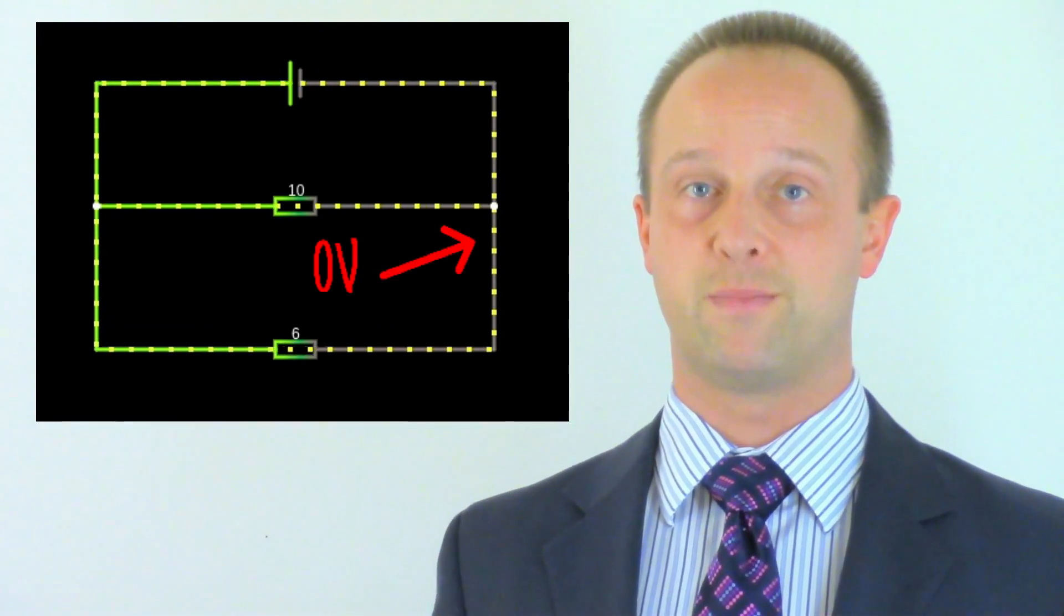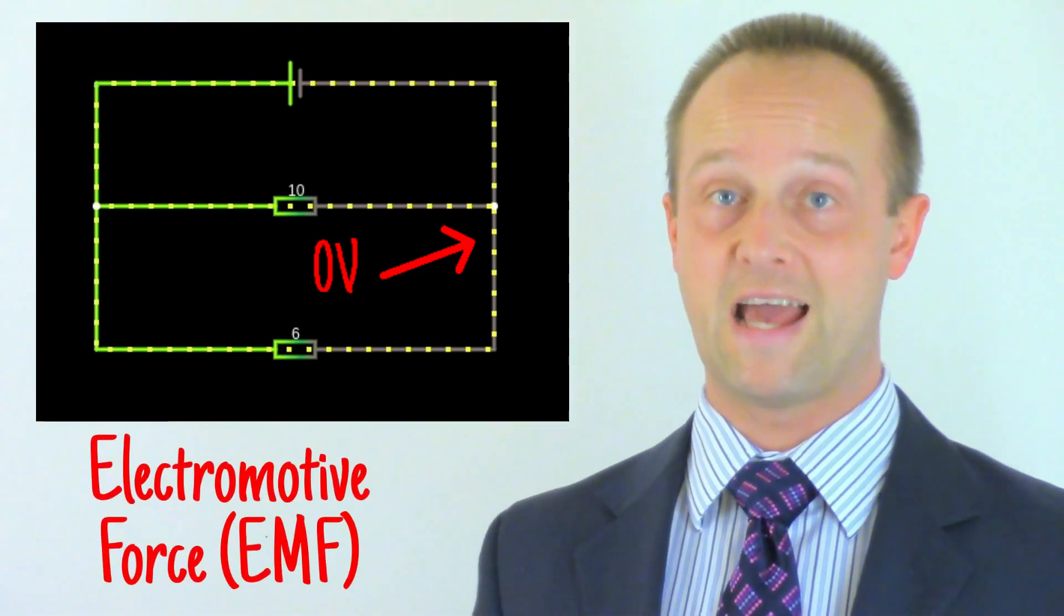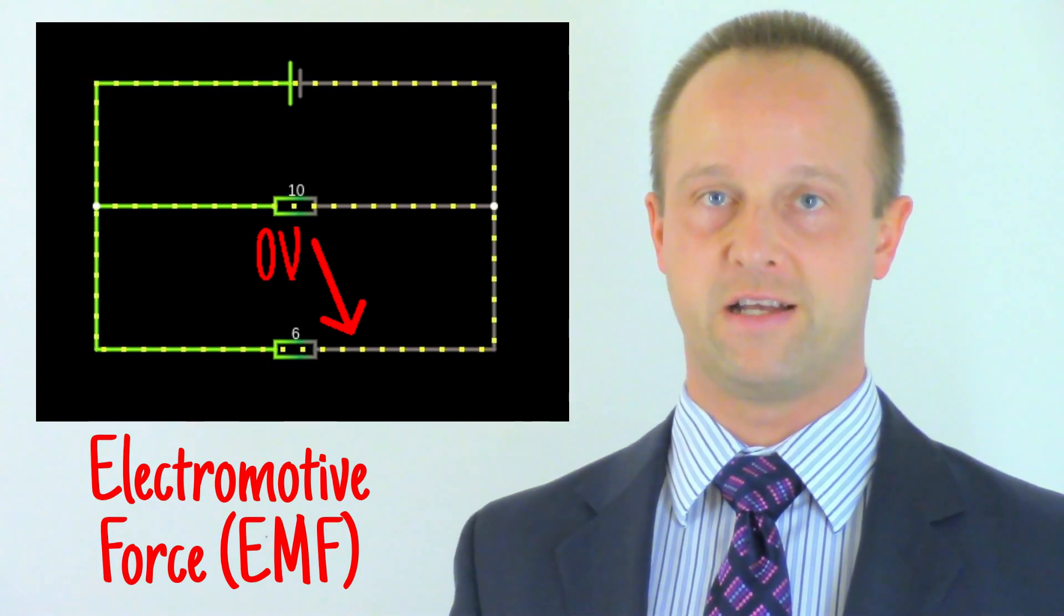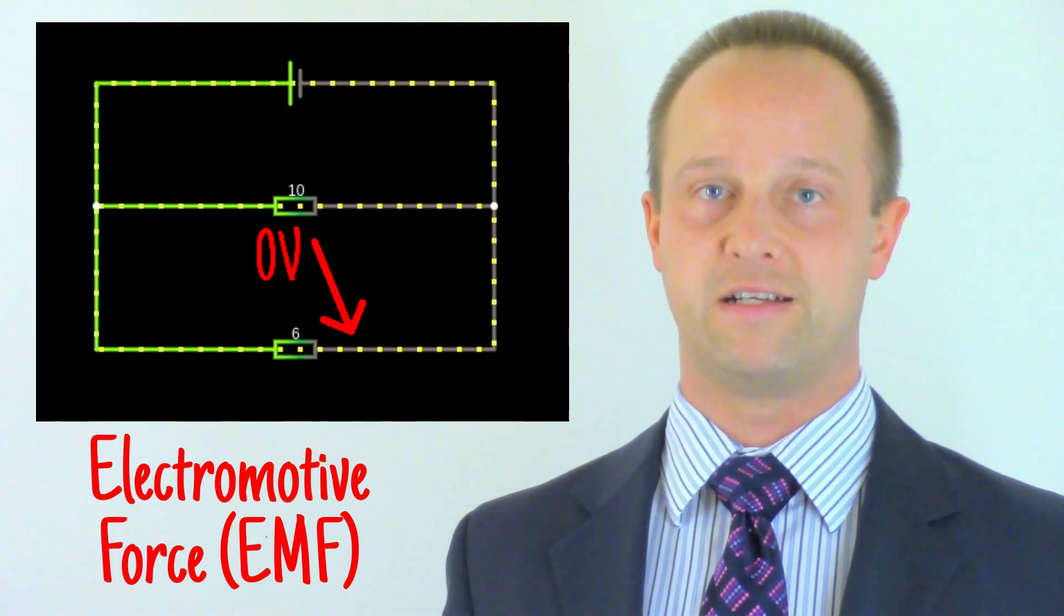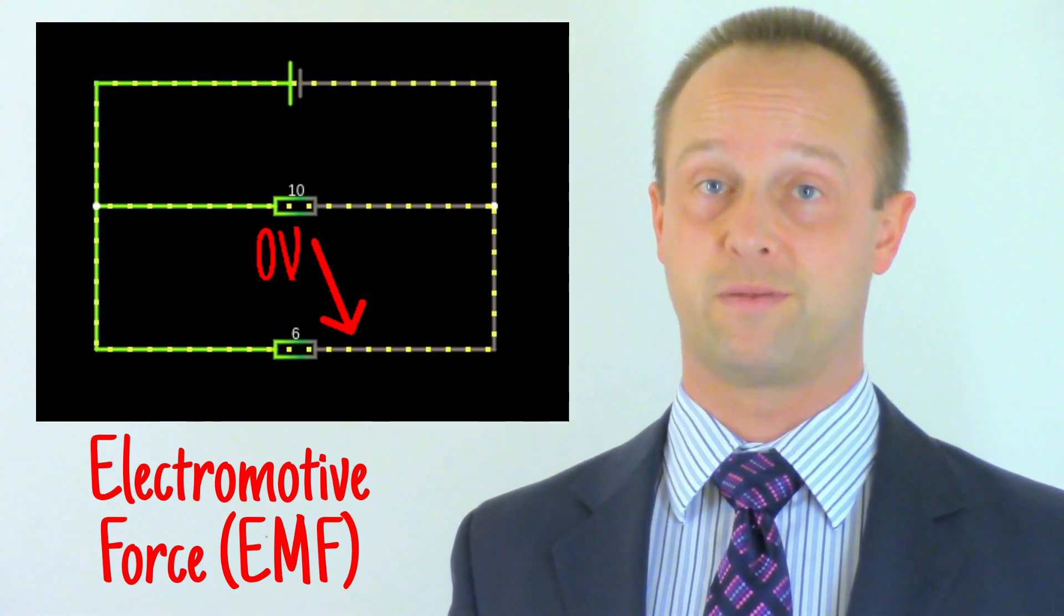We sometimes refer to the potential difference across the power supply as the electromotive force, or EMF. This is really just the idea that it's the potential energy which gives the electrons the energy to flow as a current. Basically, the EMF is just the potential difference across the supply.